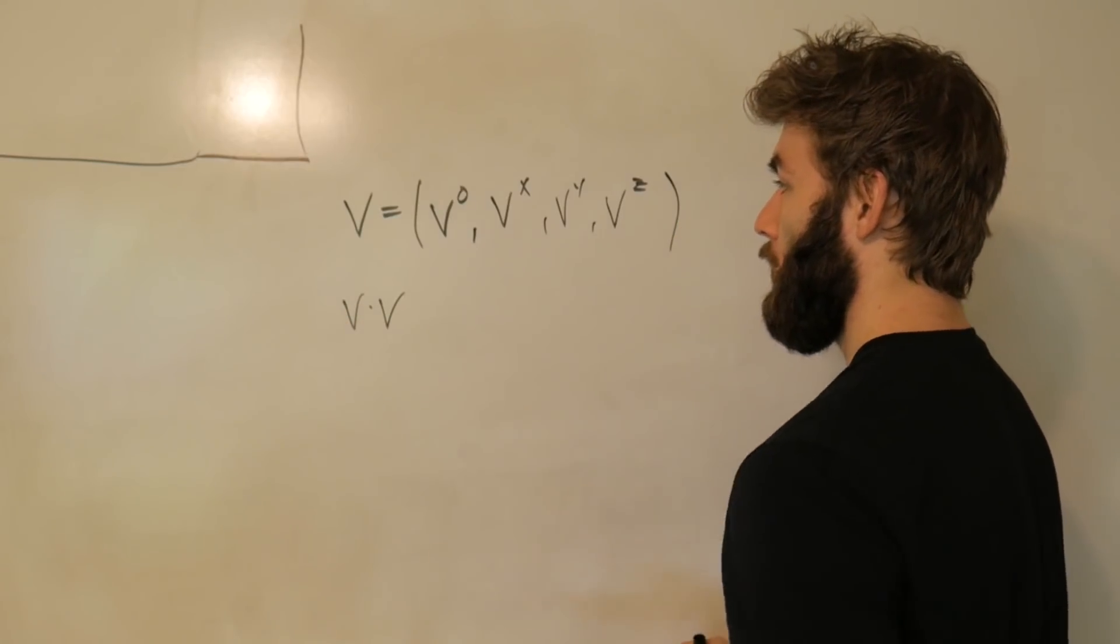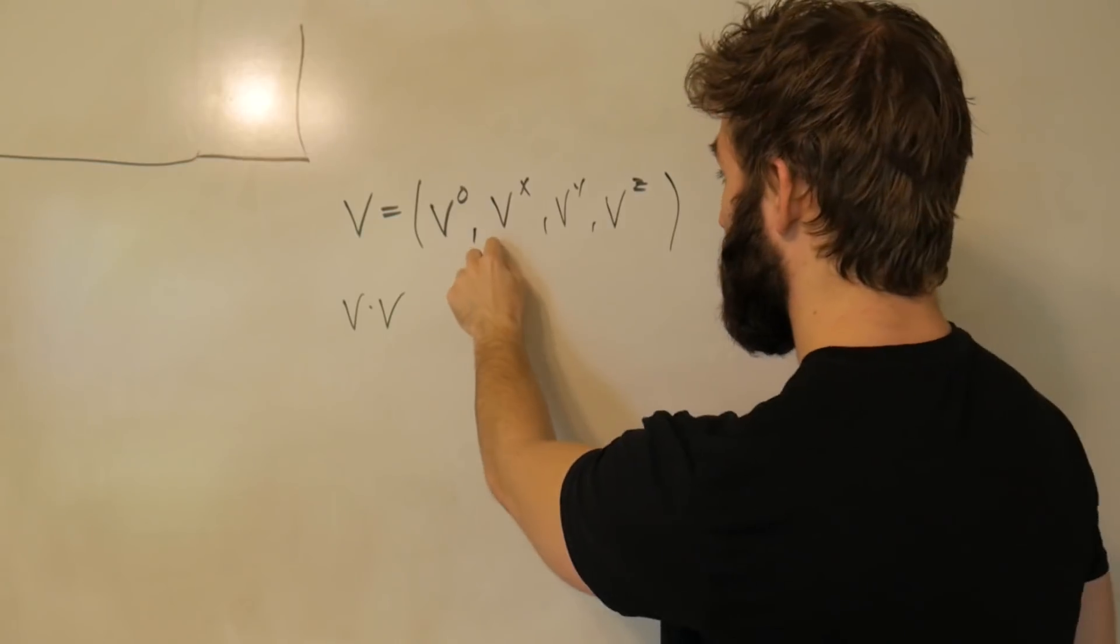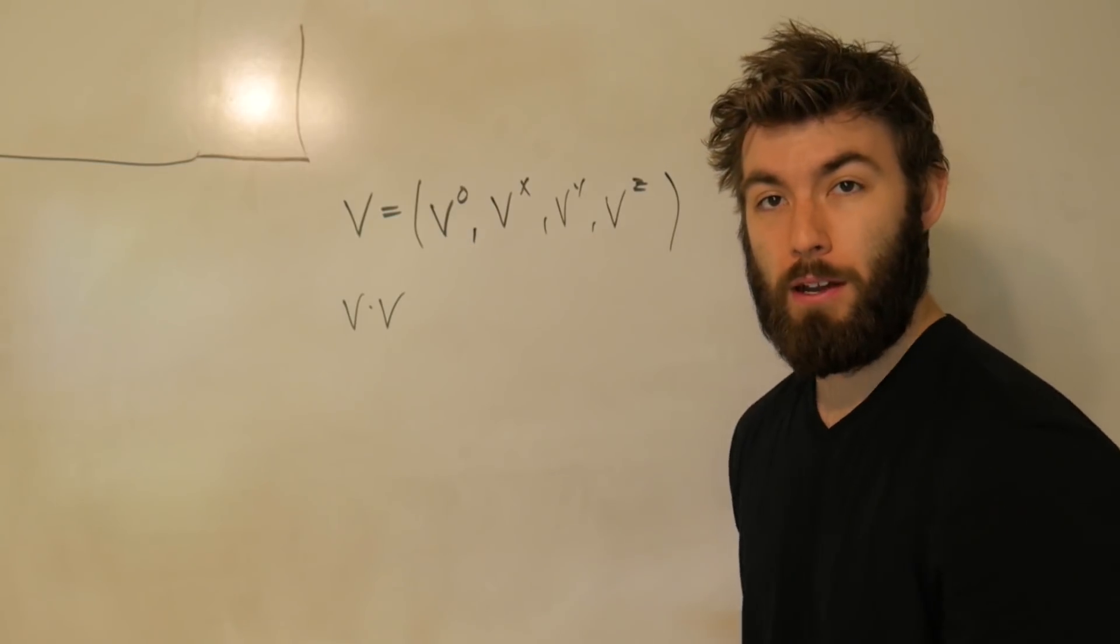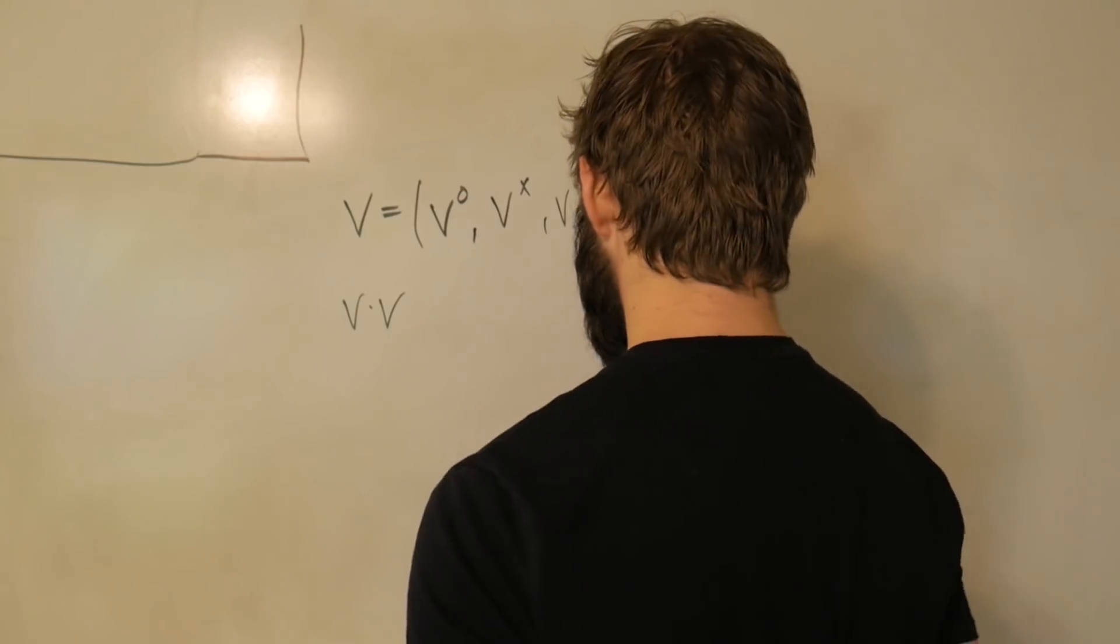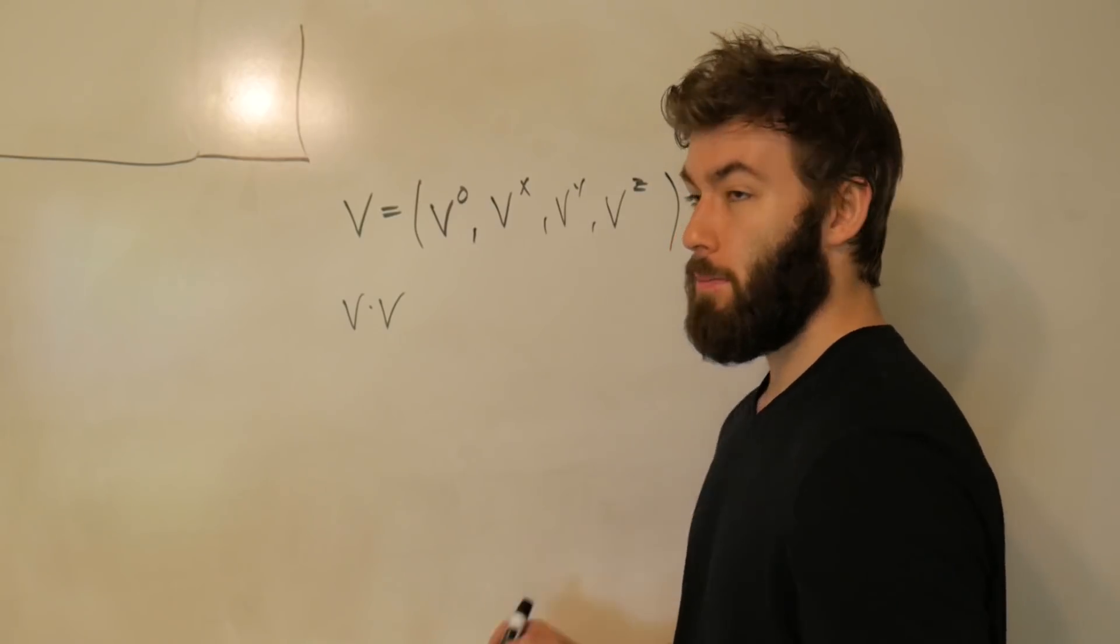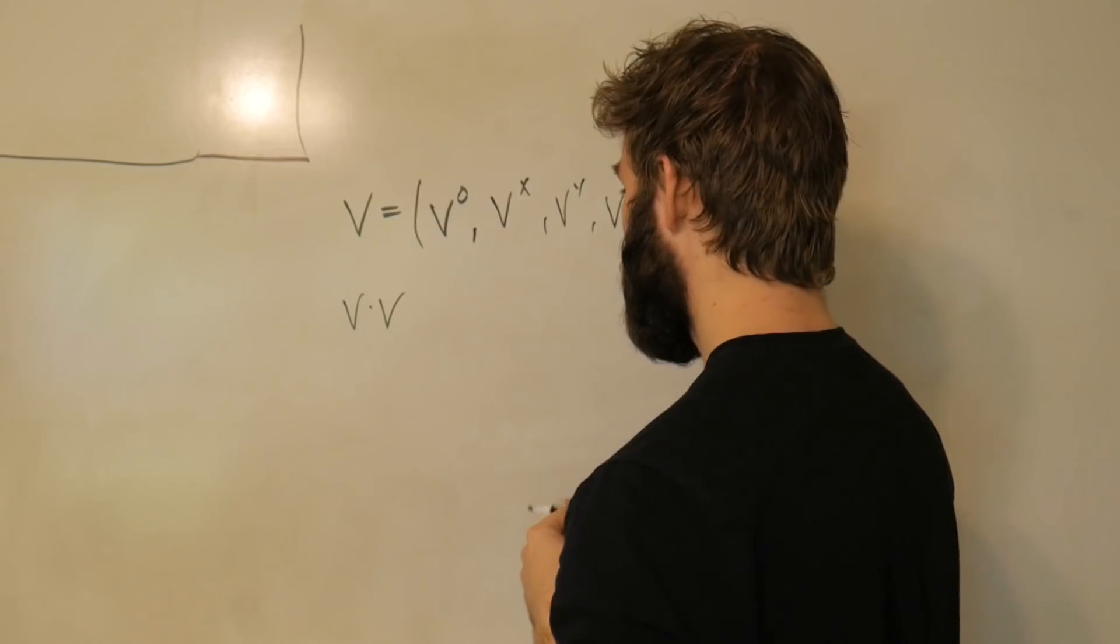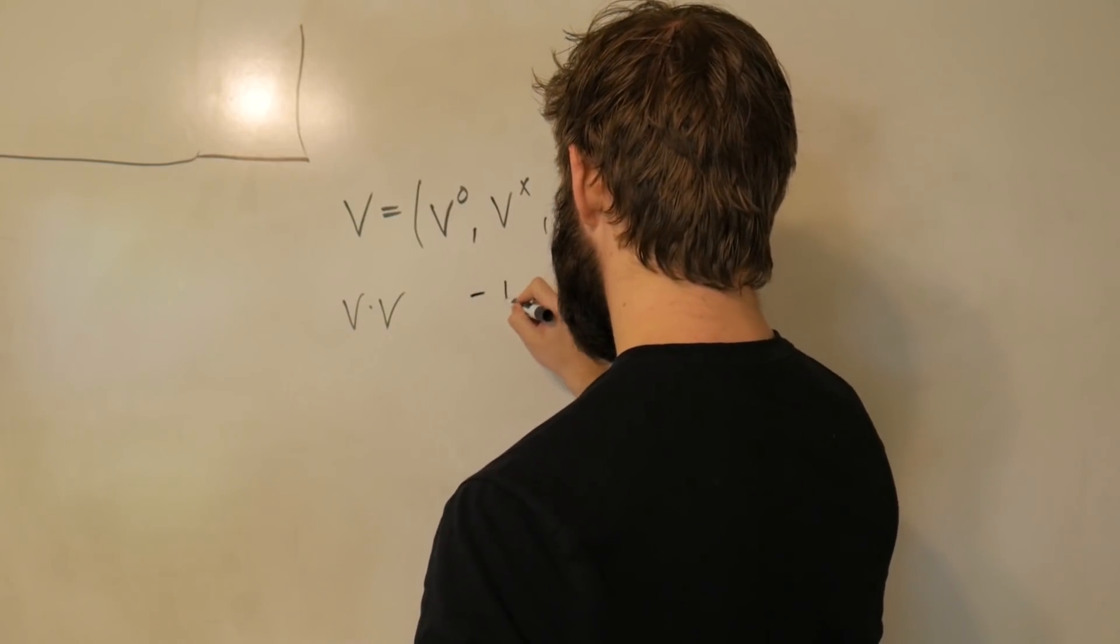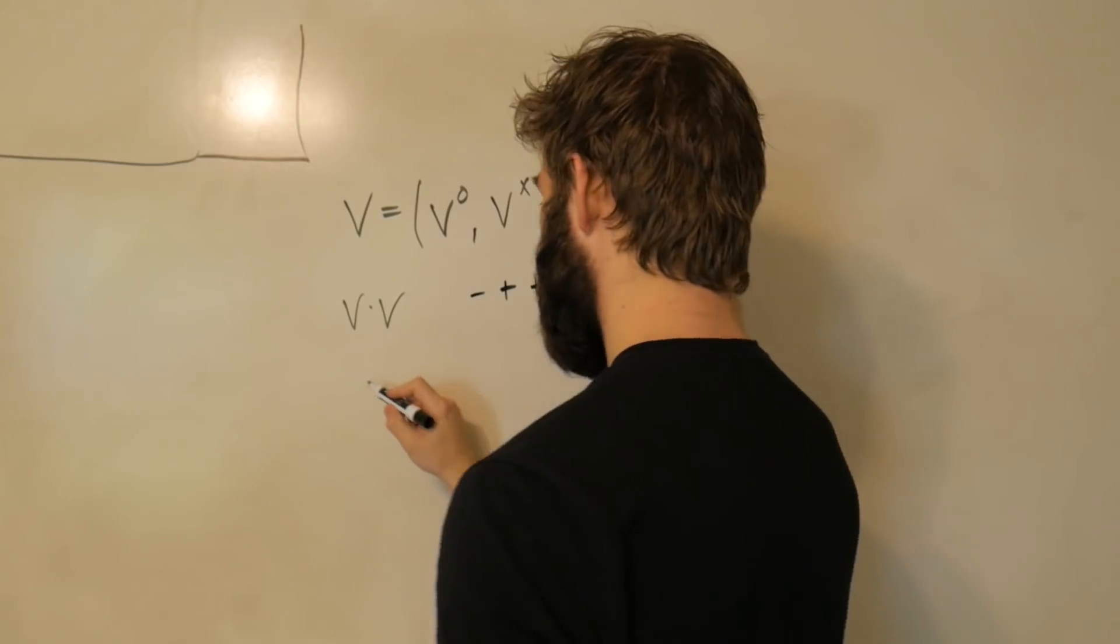Now, with a normal vector, what you could do is you could just multiply the same component and add them together. But that's not the case for a four vector. For a four vector, you have to incorporate what's called a metric tensor. And we're going to use what's called the plus, minus, minus, minus, actually, no. Scratch that. Let's go ahead and use the minus, plus, plus, plus metric signature.